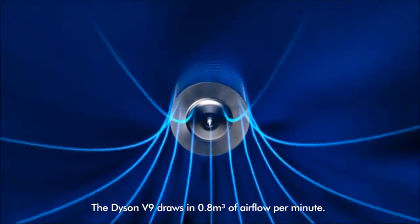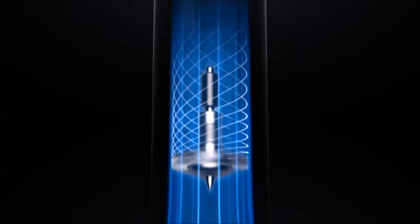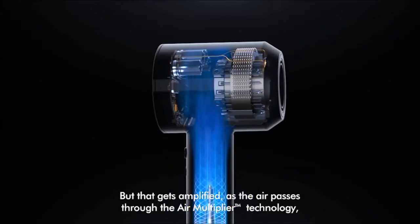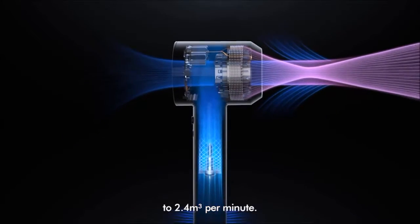The Dyson V9 draws in 0.8 meters cubed of airflow per minute. But that gets amplified as the air passes through the air multiplier technology to 2.4 meters cubed per minute.